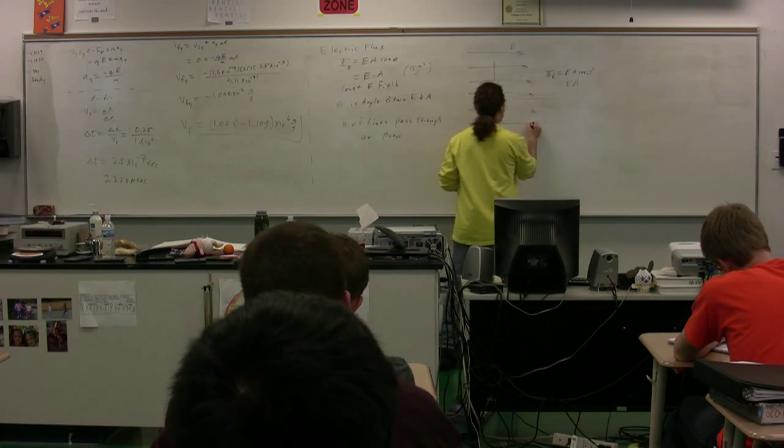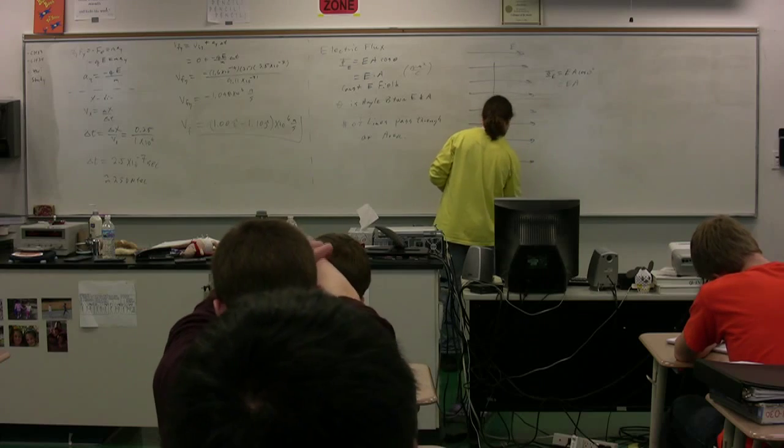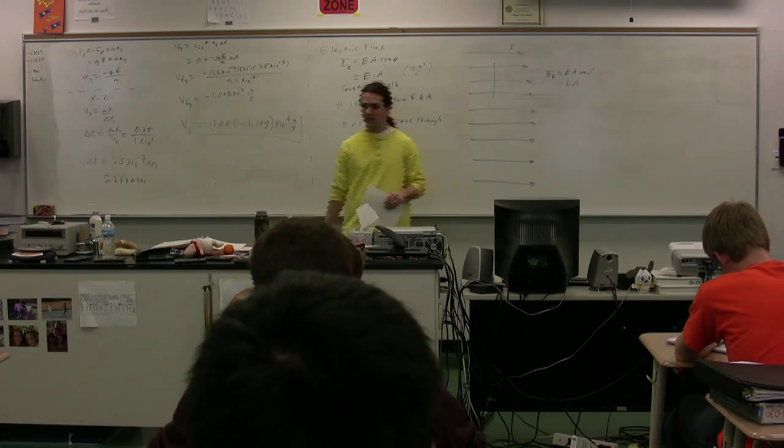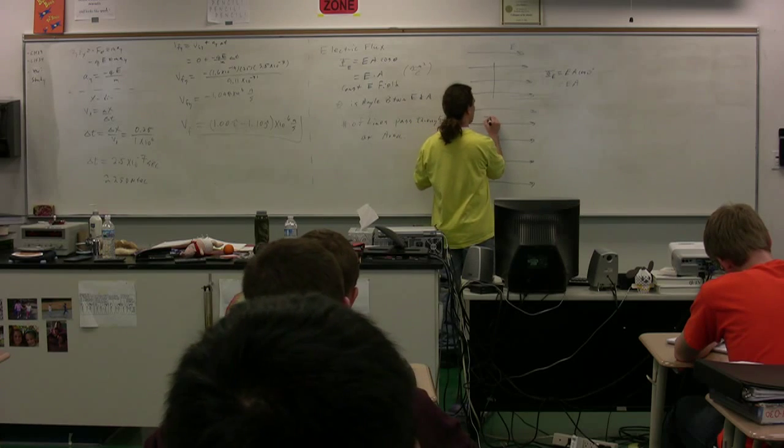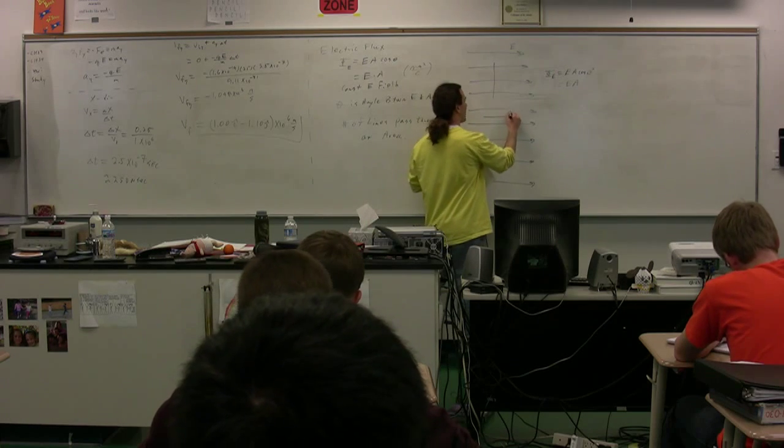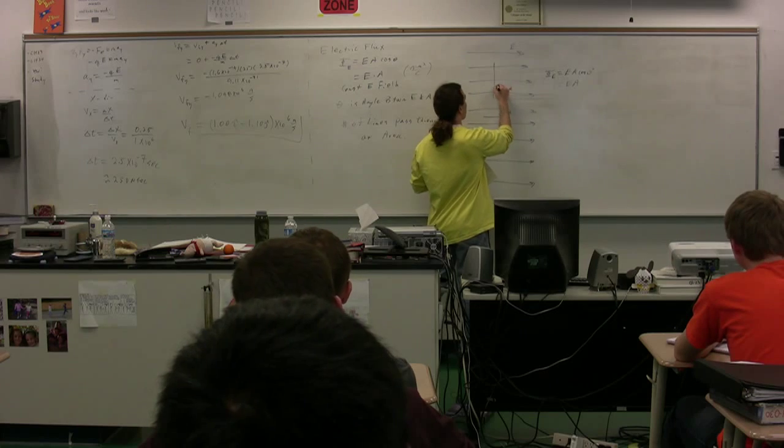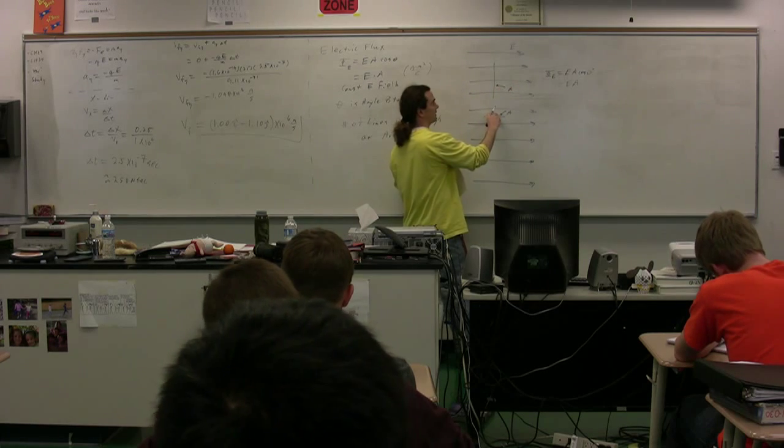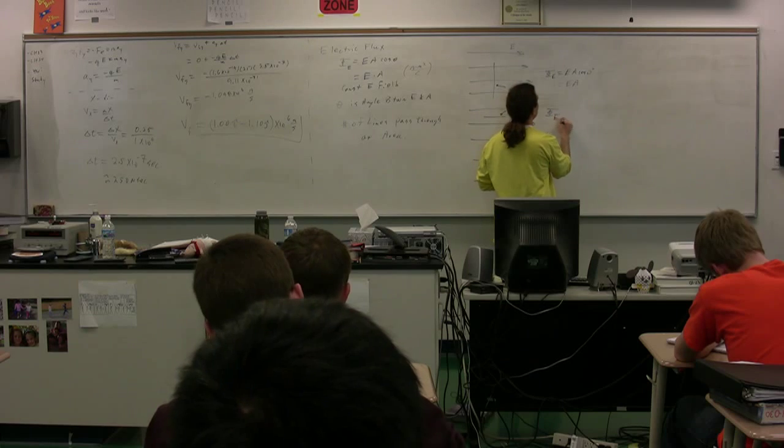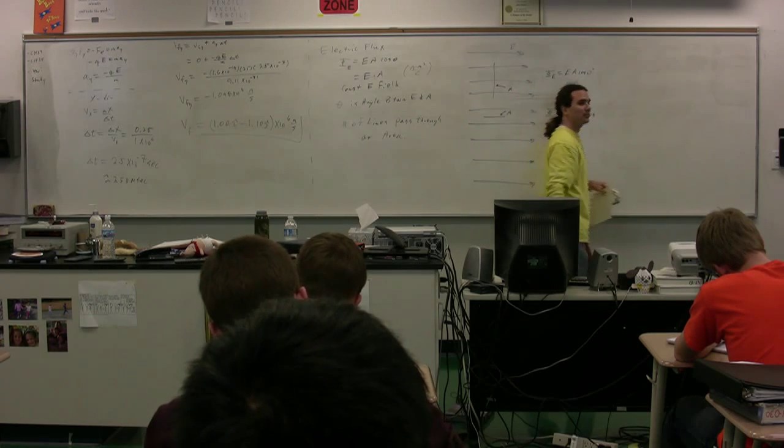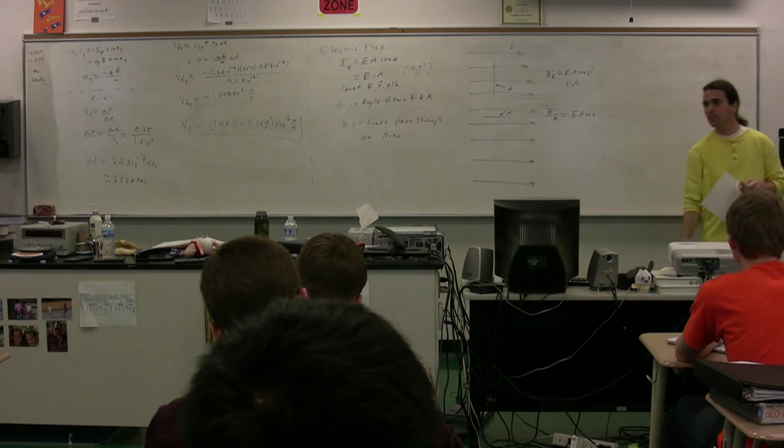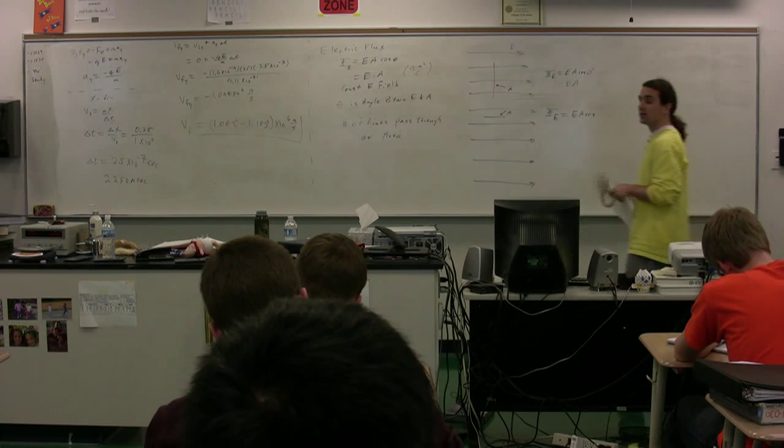If we take and adjust the orientation of our surface, and we make it so that the surface looks like this. If this is our area, right here, like this, the electric flux is equal to E A times a cosine of what angle? What's that? 90 degrees. 90 or?